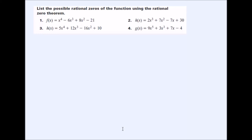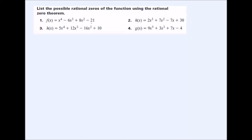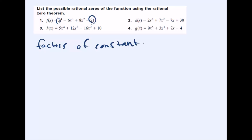To use this theorem, start by listing all the factors of the last term and all the factors of the first term. The constant is the term without a variable. Here we have 21, so the factors of 21 are 1 and 21, and 3 and 7. When we use the rational zero theorem we also include the negative answers, so we put plus or minus for each of those.